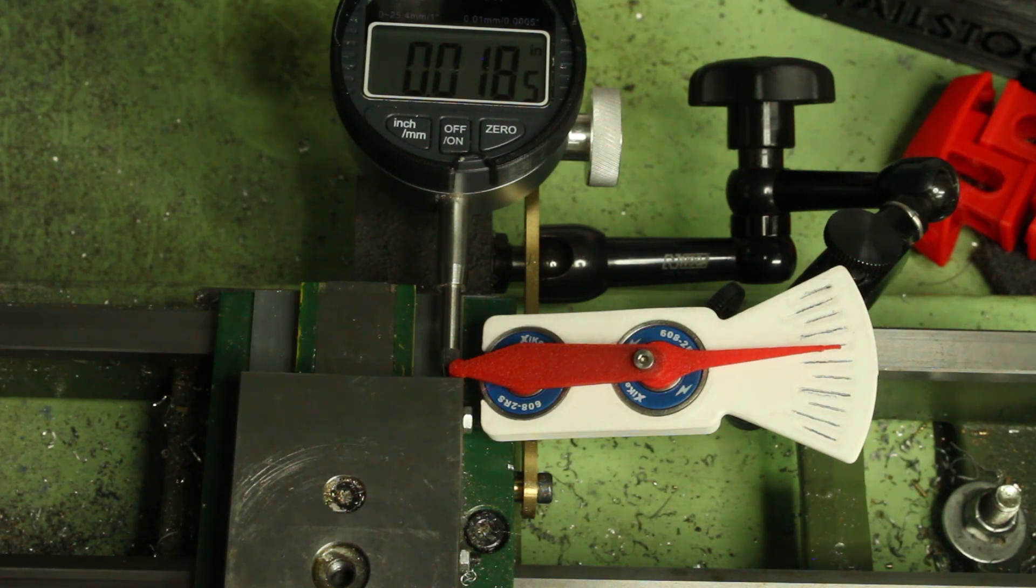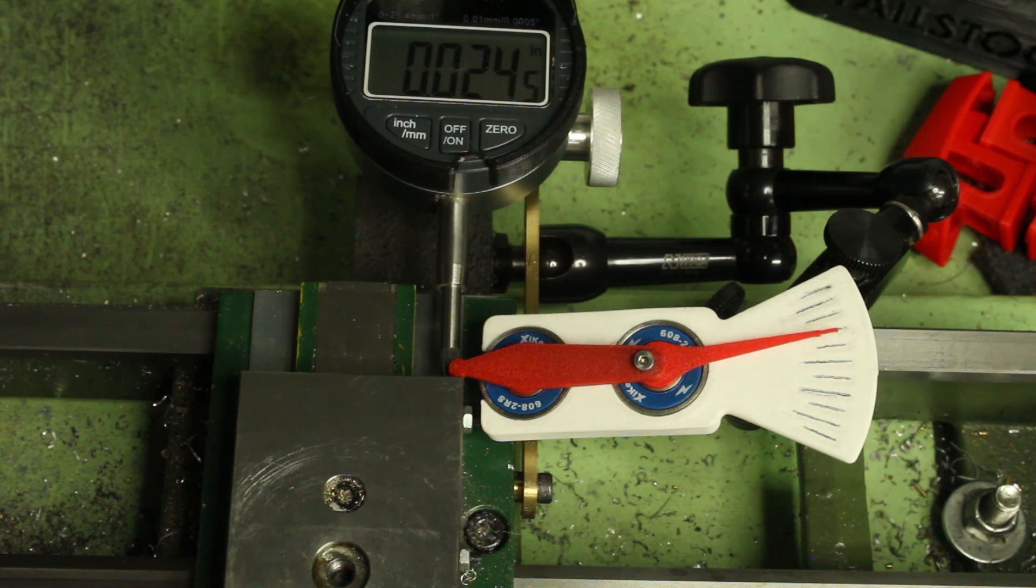Yeah, so you can see that this thing is pretty accurate without the spring. And with the spring, it still works. You can preload it and it works well within like a 15 thousandths range, but it does just accumulate error as more tension gets on the spring.